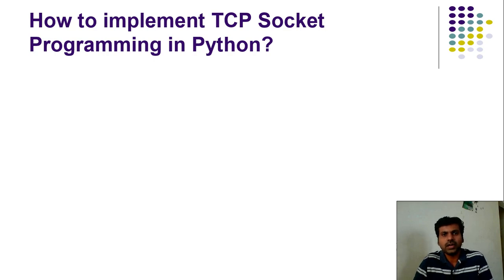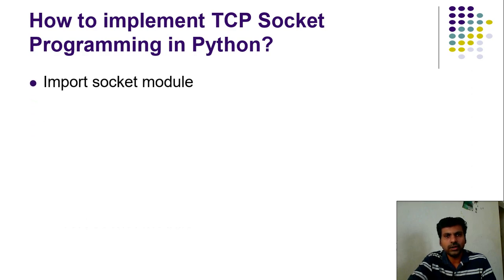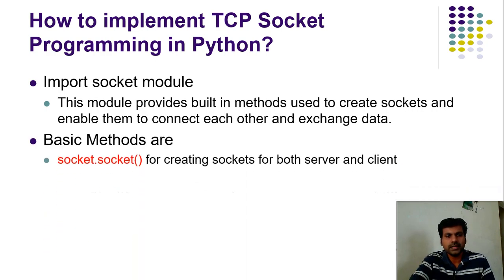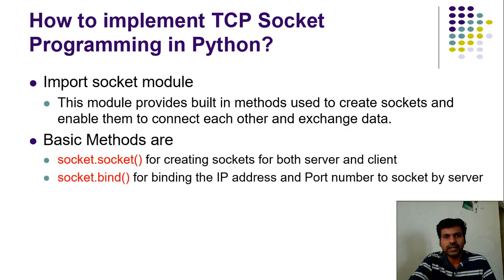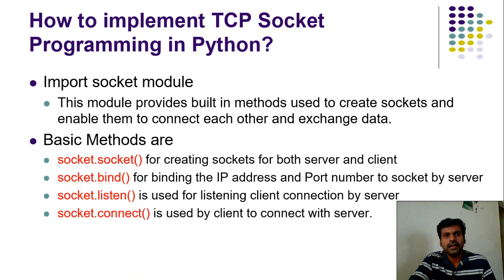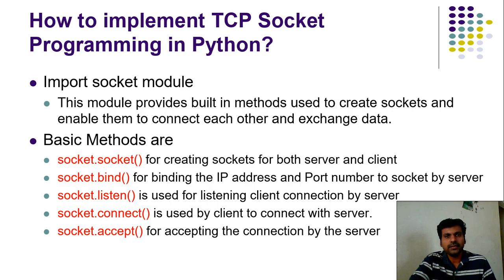To create a socket programming application in Python, first you need to import the socket module. This socket module provides a set of methods to create sockets and make them send and receive data between programs running on different computers. The basic methods include: socket() to create a server or client socket; bind() to bind IP address and port number with the server; listen() to make the server socket listen at a particular port number; connect() for the client to make a request to a server socket; and accept() for the server socket to accept the connection from the client.